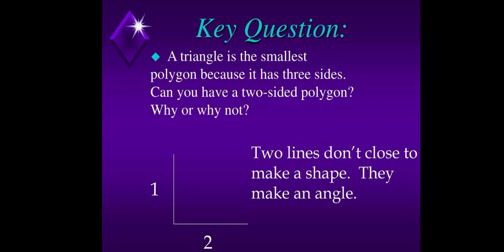A triangle is the smallest polygon because it has three sides. Can you have a two-sided polygon? Why or why not? So is it possible? It is not.